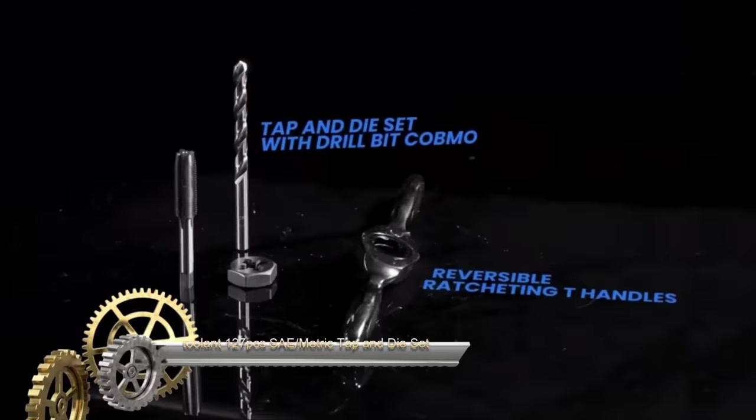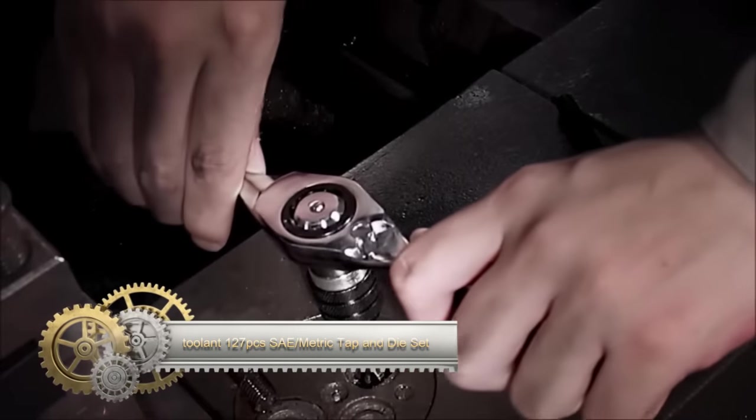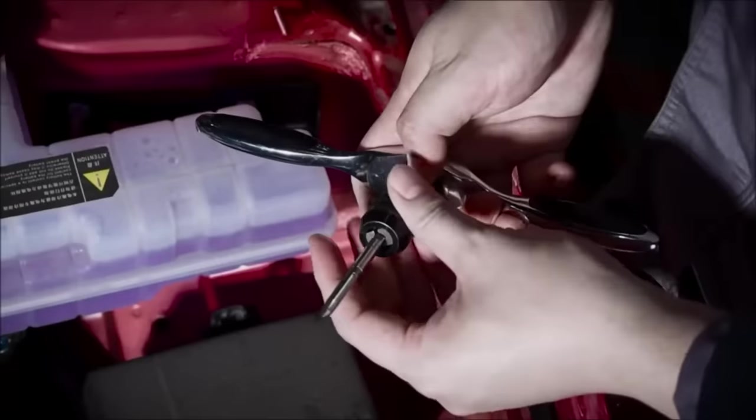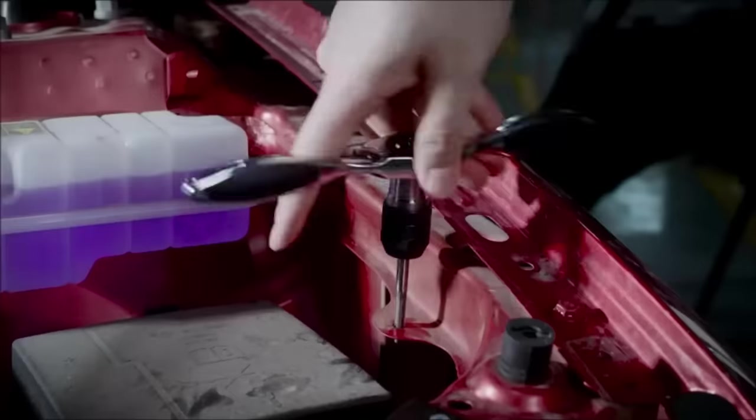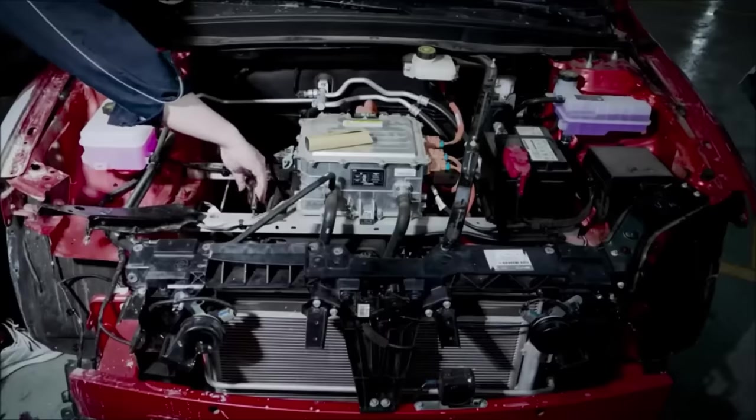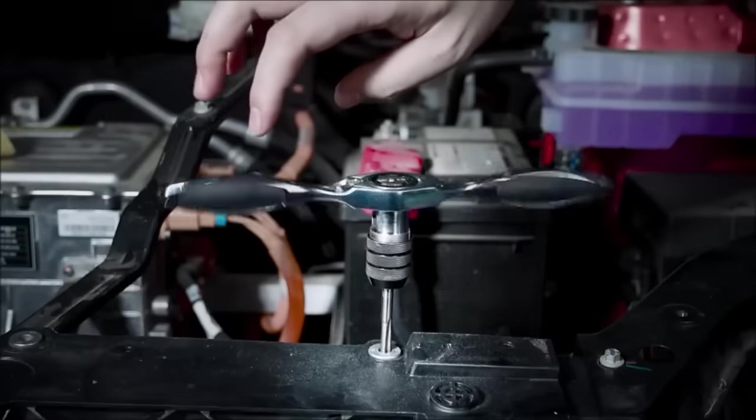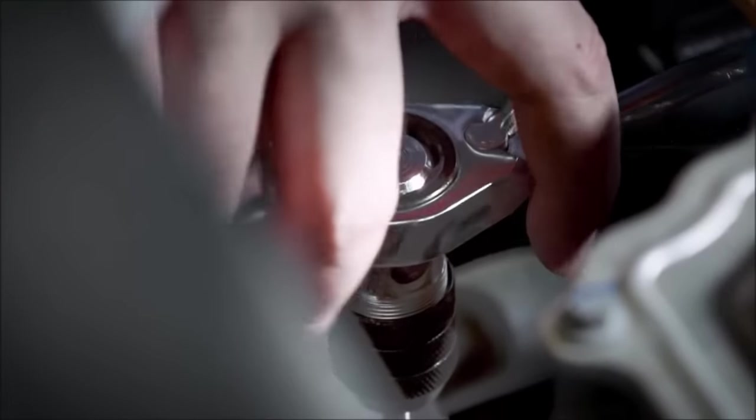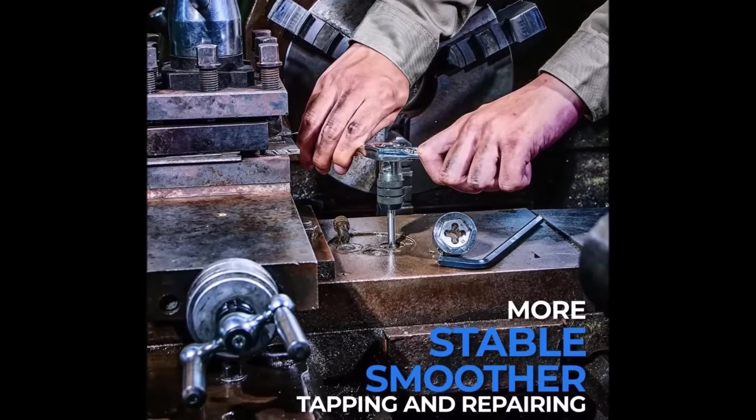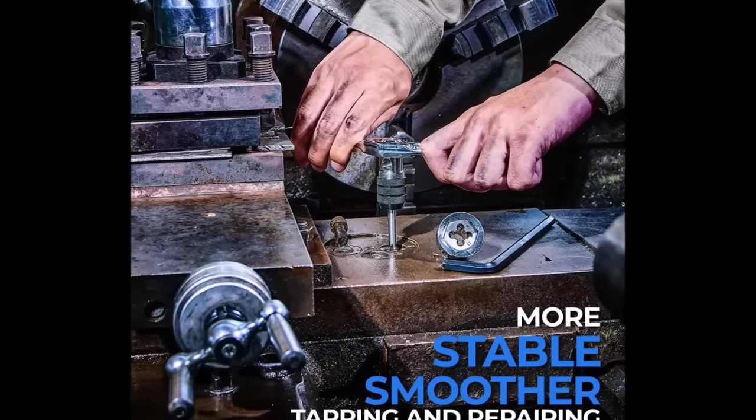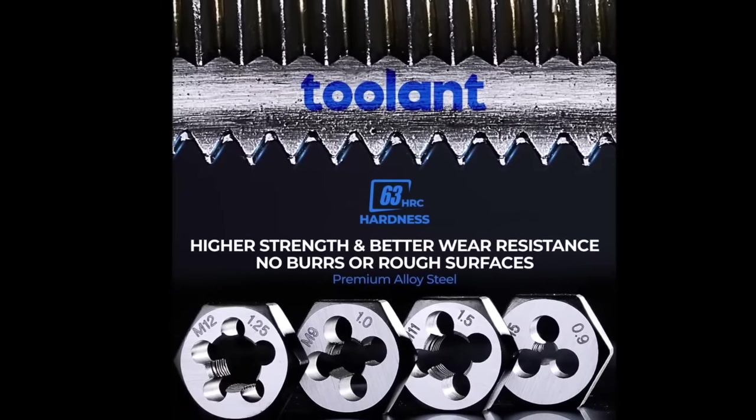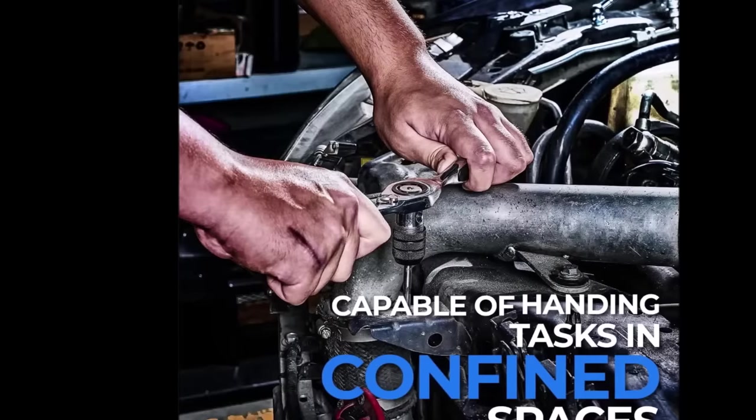The Toolant 127-Piece SAE Metric Tap and Die Set is a versatile tool set with multiple applications, including creating, repairing, and matching threads in metal, wood, and plastic. It can also assist in removing broken screws and bolts. This comprehensive set offers a range of taps, dies in both SAE and metric sizes, and various drill bits, all made from high-quality steel and heat treated for durability. The set is neatly organized in a robust carrying case with a comfortable handle for convenient storage and transport.